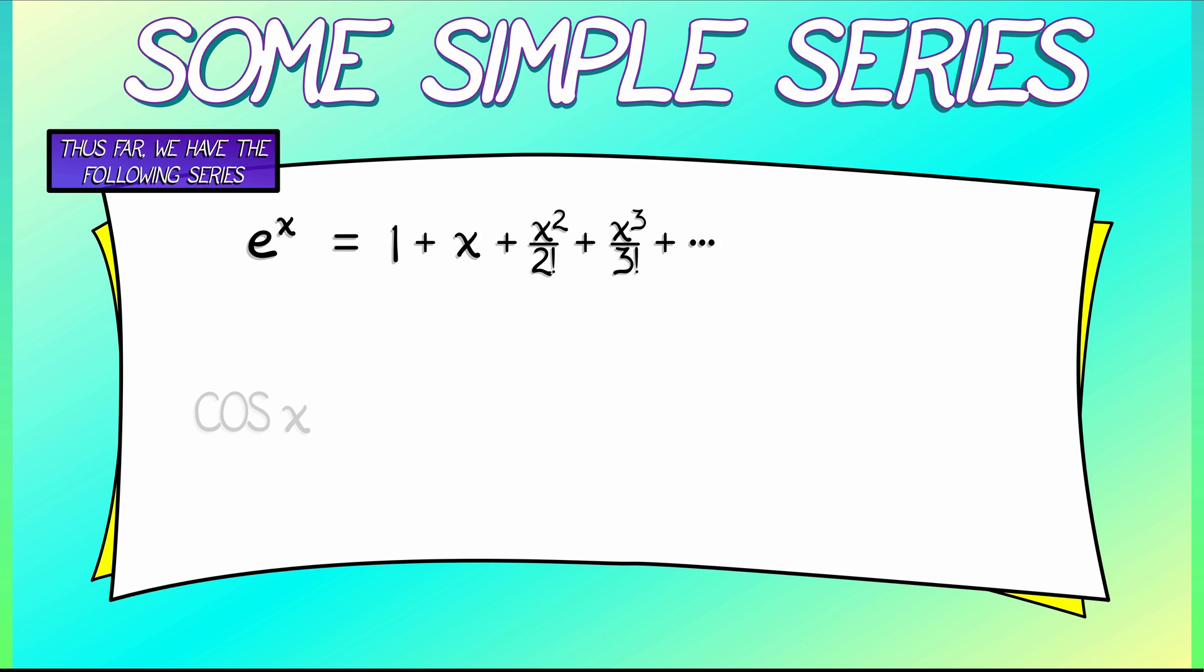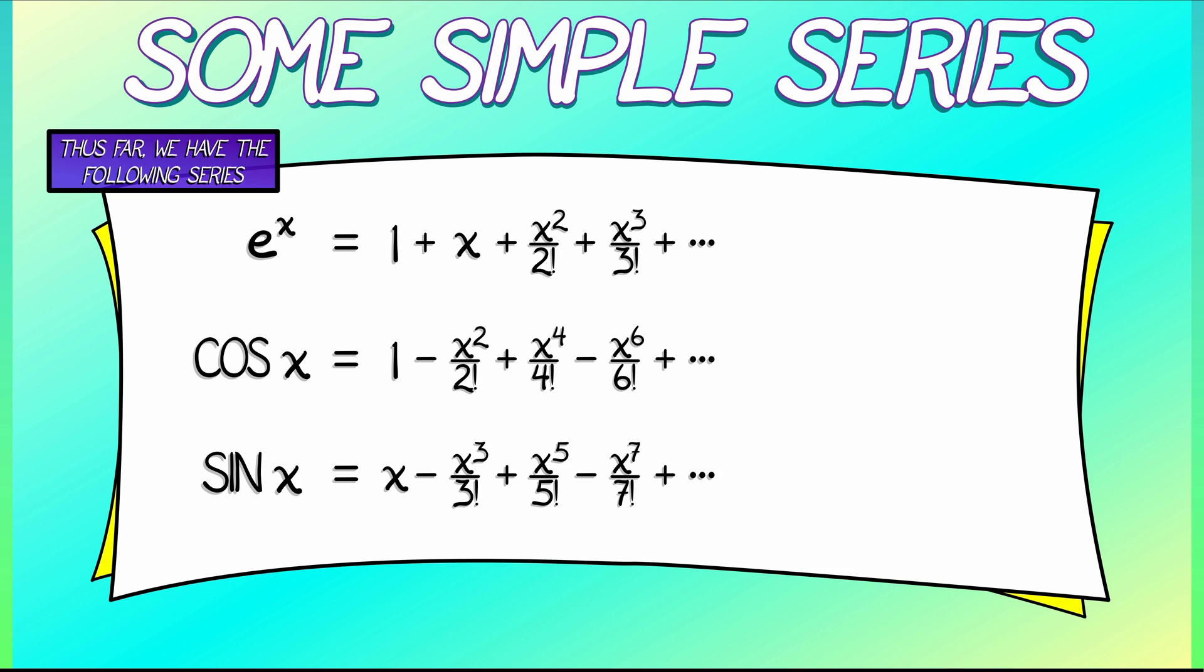We've looked at a series for cosine of x. That consists of the even terms of the exponential series, but alternating plus minus plus minus. The series for sine of x consists of the odd terms of the exponential series, again alternating plus minus plus minus.